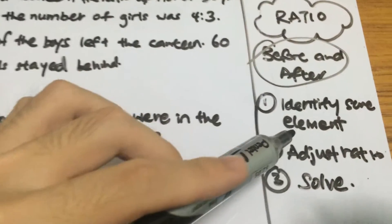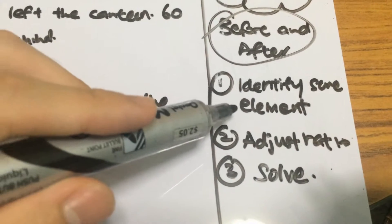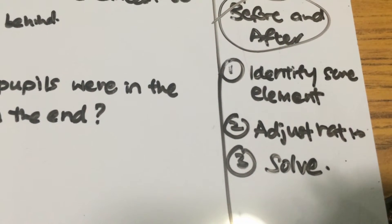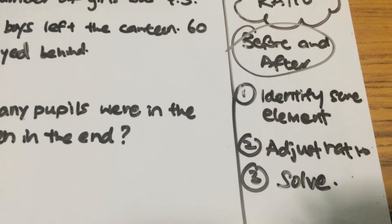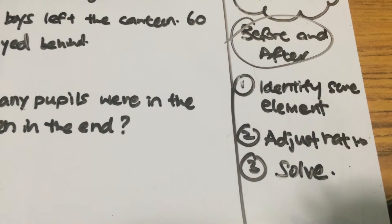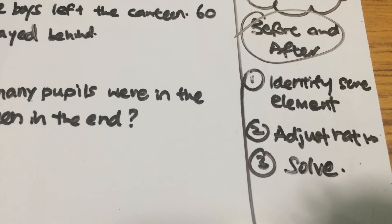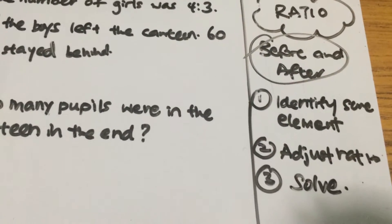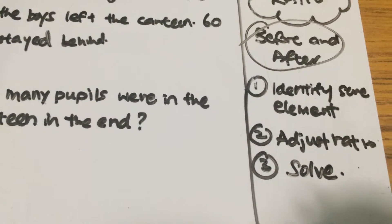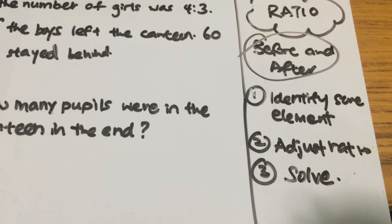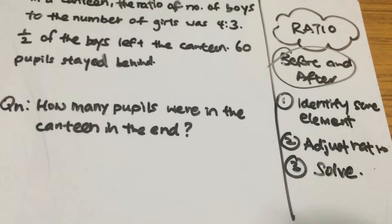So here's the trick — there are three steps. The first step is to identify the same elements. What I mean by identifying the same elements is to identify items or that particular element that remains the same before and after — the item remains unchanged. Then you make use of this element to adjust the ratio itself, and then you continue to solve the problem.